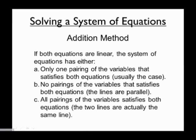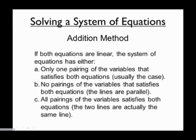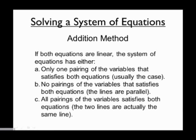When we have two linear equations, there are three different possible outcomes. Most of the time we have situation A, where there's only one pairing of variables that satisfies both equations — two lines that cross at one point. That's the focus of this video and most of grade 10 math. We could also have two parallel lines that never cross, meaning no solution, or two lines that are essentially the same line written differently, giving infinite solutions. We don't focus much on those special cases.